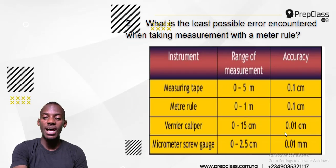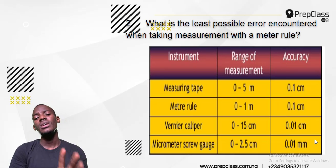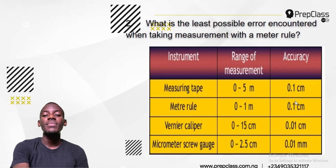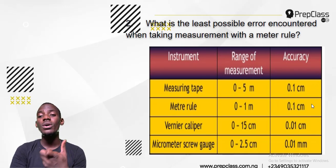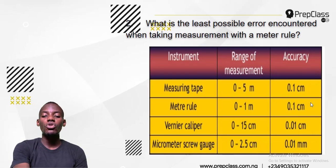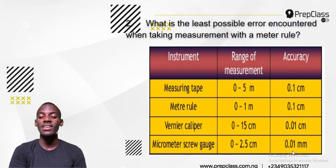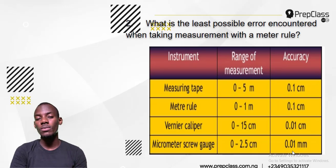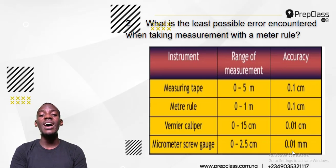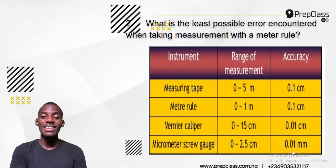For a vernier caliper, the minimum error is 0.01 centimeter, and for a micrometer screw gauge it is the smallest at 0.001 millimeter. Those are the accuracy values — the minimum errors — that these instruments should have. And that is the answer for number two.